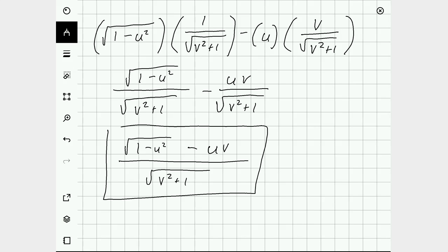If I wanted to, from here, I could rationalize. I probably should multiply top and bottom by square root of v squared plus 1 so that it cleans up a little bit further. But I'm going to leave it like that.